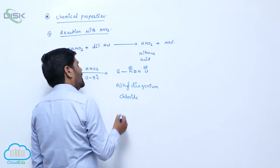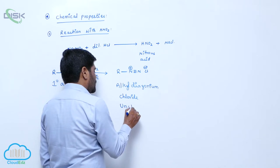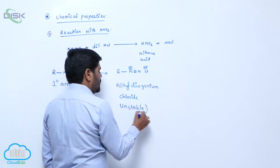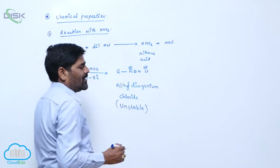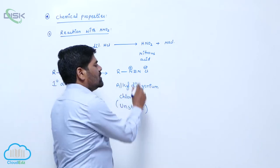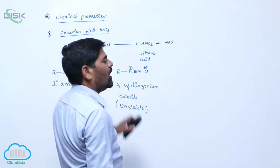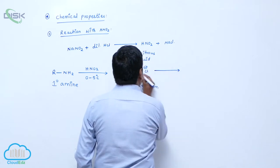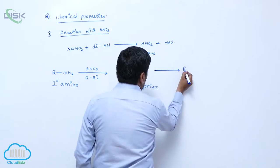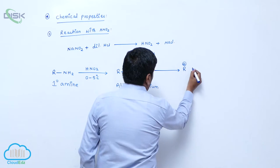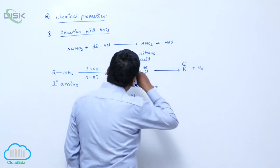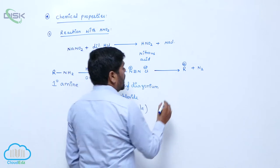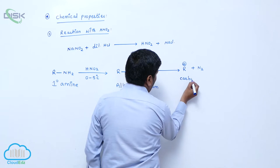Alkyldiazonium Chloride is generally unstable. Here the resonance is not possible. Immediately the nitrogen dissociates from the alkyl group to form N2 molecule, so it is unstable. It dissociates into R+ plus N2 molecule, forming a carbocation.